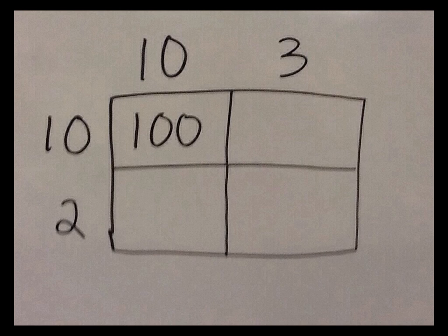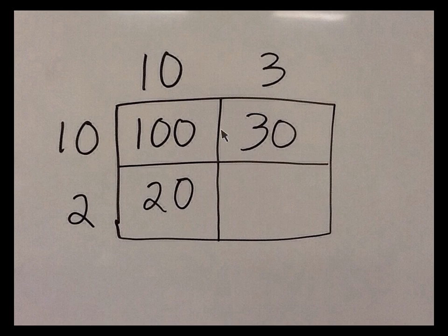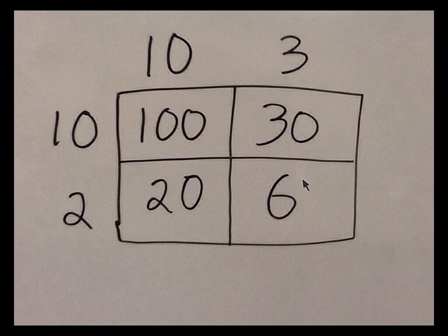Now we're going to take care of 10 times 3, which is 30. And finally we're going to multiply 2 times 3, which is 6. So now we have our 1, 2, 3, 4 partial products just like we did before.